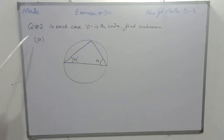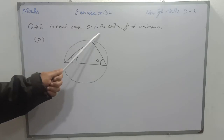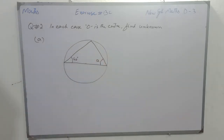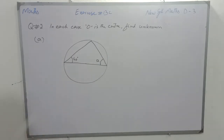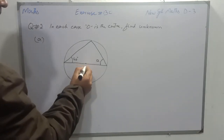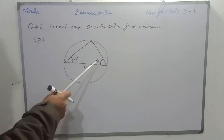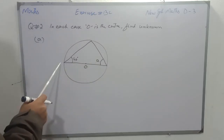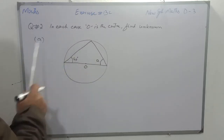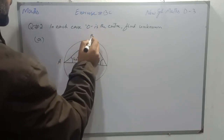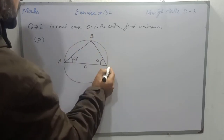Question number two: in each case, O is the center of the circle. Find the value of the unknown. So it is a circle, O is the center, and we have to find the value of A. First I will give the name of the points as A, B, and C.